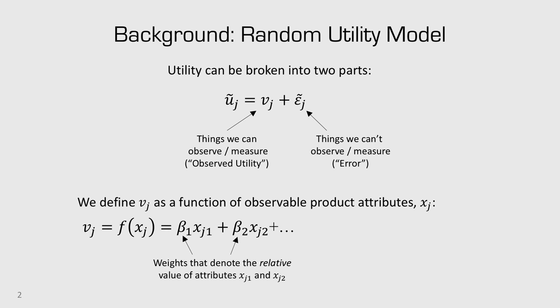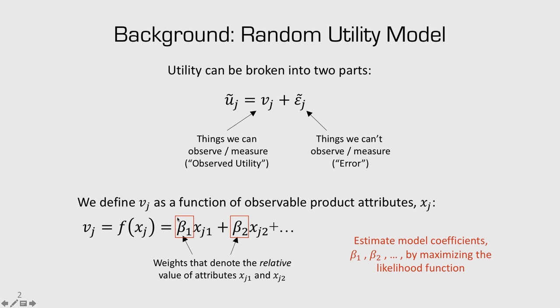The parts that we can observe can be defined as a function of the product attributes. So if we had something like a car, x1 might be price, x2 might be color, and so on. What we want to know are these beta parameters — the value of these coefficients — so they can tell us the relative value of attributes of the product. We're going to estimate that using maximum likelihood estimation.